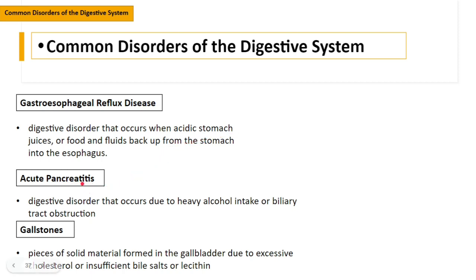Acute pancreatitis is a digestive disorder that occurs due to heavy alcohol intake or biliary tract obstruction. Please take note that it is not only heavy alcohol intake that triggers acute pancreatitis — biliary tract obstruction can also trigger it. Gallstones are pieces of solid material formed in the gallbladder due to excessive cholesterol or insufficient bile salts or lecithin.